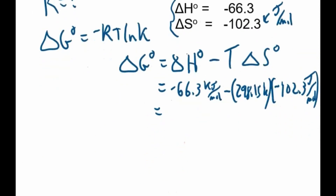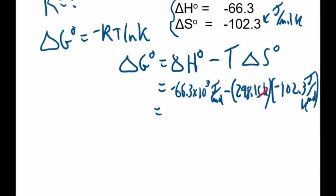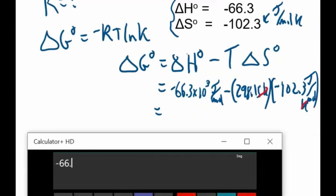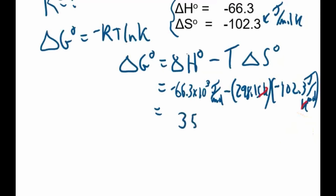Since ΔH° is in kilojoules and ΔS° is in joules, we need consistent units. Converting: ΔH° = −66.3 × 10³ J/mol. Then: ΔG° = −66.3 × 10³ − (298 × −102.3). The Kelvin cancels out with the J/(mol·K) units. The result is a negative number: −35,815 J/mol, meaning it's spontaneous to the right.